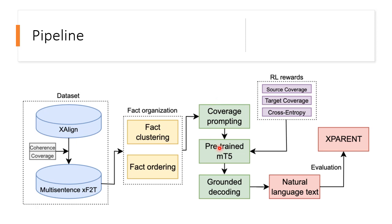This is fed to a pre-trained mT5 model, and RL rewards are used to guide the training. Next, a grounded decoding strategy is used, which pays attention to the source, following which we obtain a natural language output, which is evaluated using x-parent.